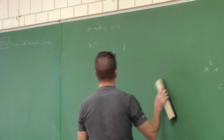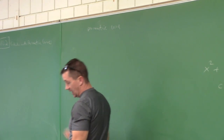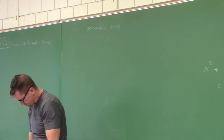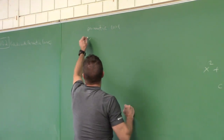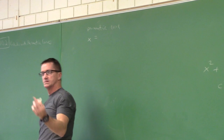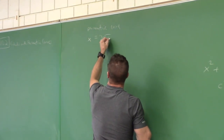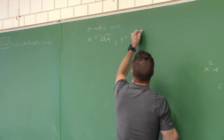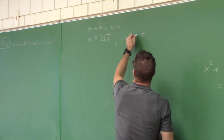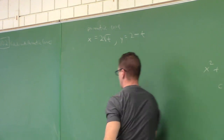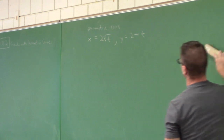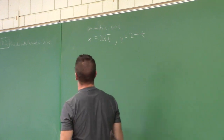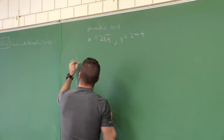Here's another example — not everything is trigonometric. Not all parametric curves are trig. Let's sketch x equals 2 times square root of t, y equals t minus 2, from t equals 0 to t equals 4.